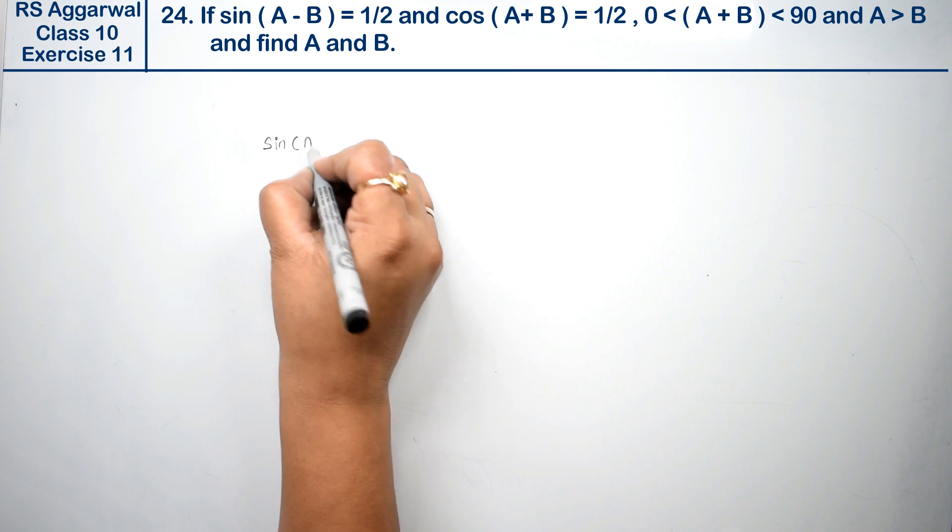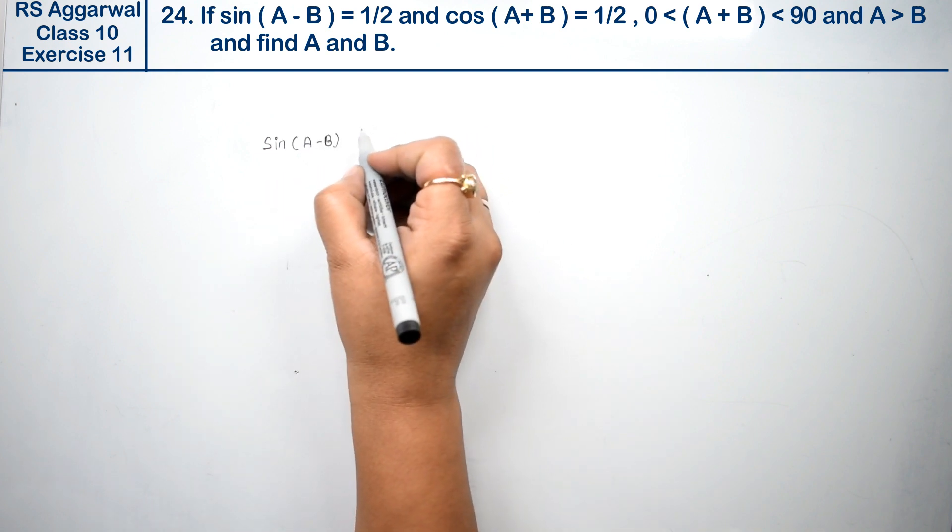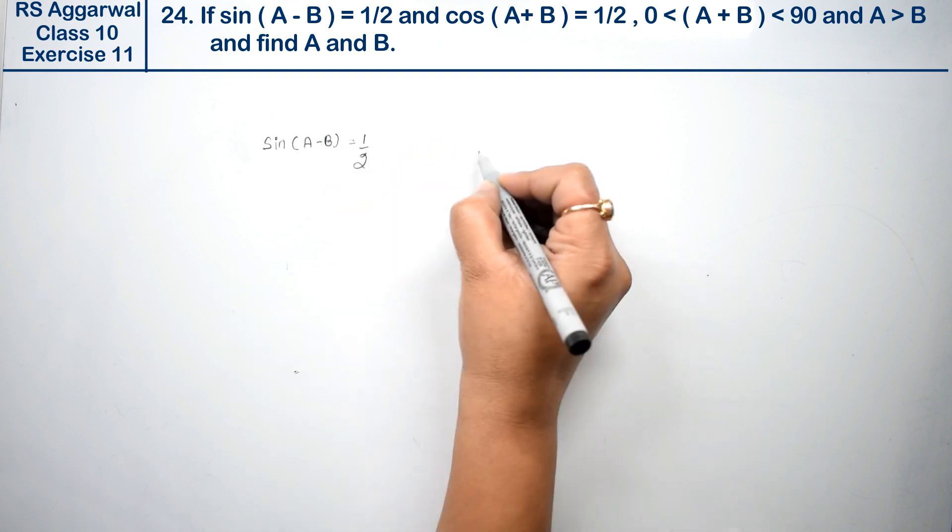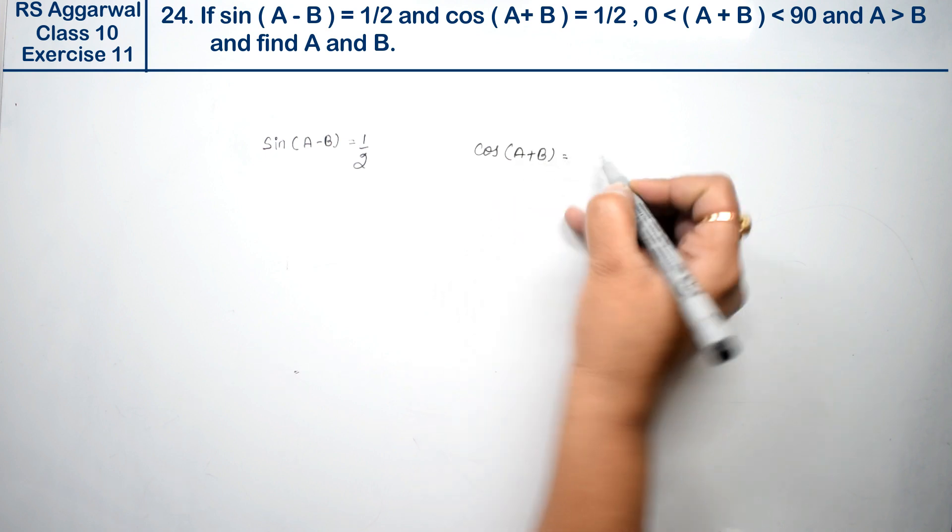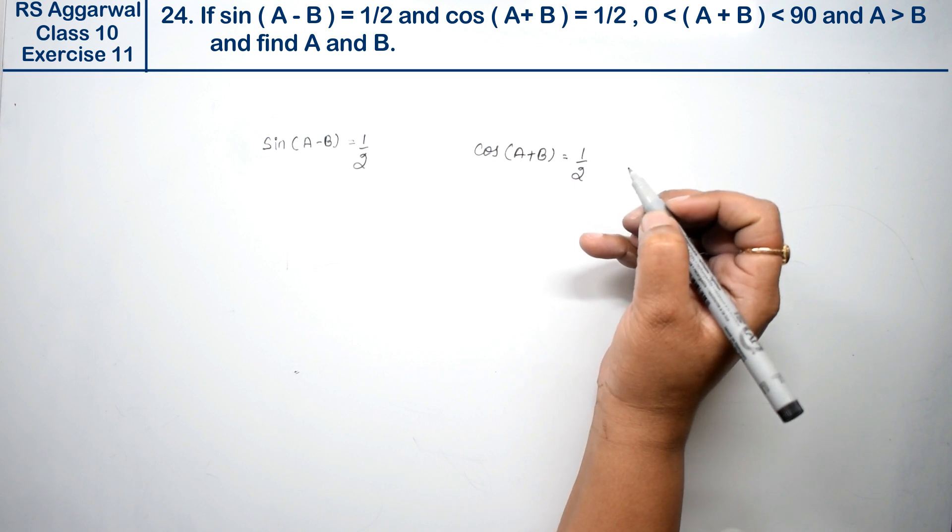sin(A - B) ki value dei rakhi hai, that is 1 upon 2, and cos(A + B) ki value bhi that is 1 upon 2. These two values are given.